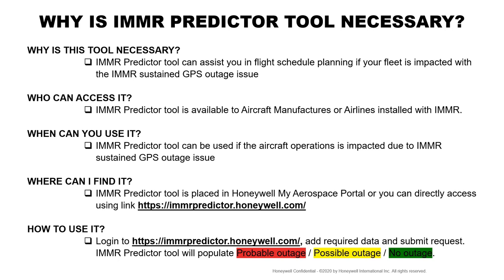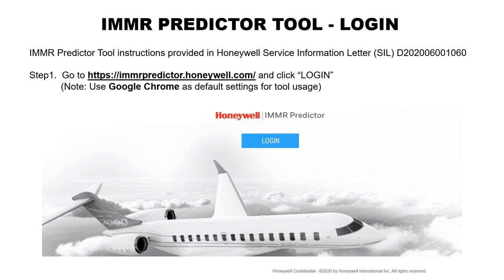How do you use it? Log in to the link shown here, add the required data, and submit your request. The IMMR predictor tool will plot a graph over time and date with probable outage, possible outage, and no outage. For your reference, the IMMR predictor tool instructions are provided in the Honeywell service information letter referenced here.